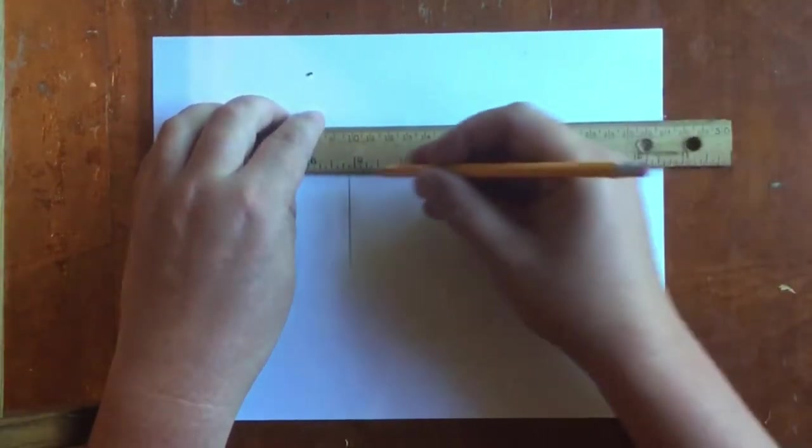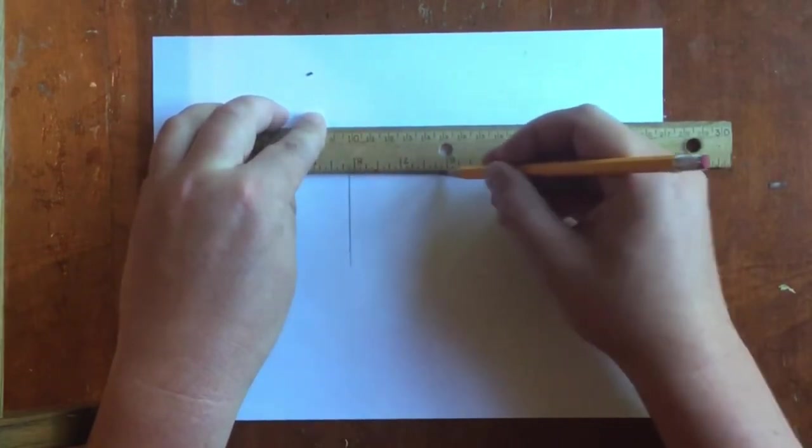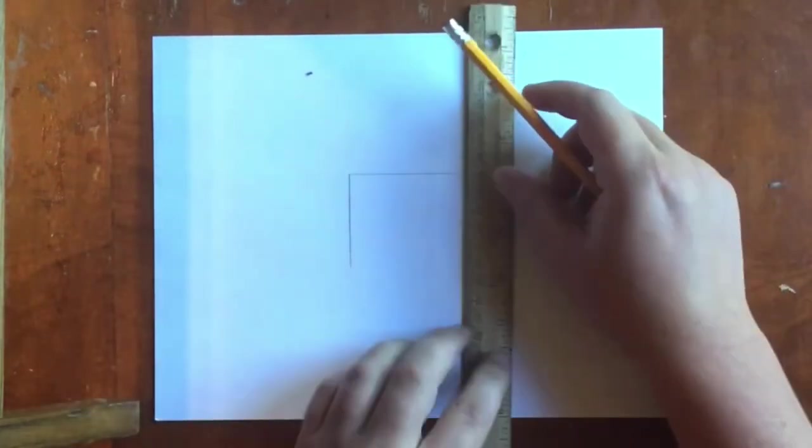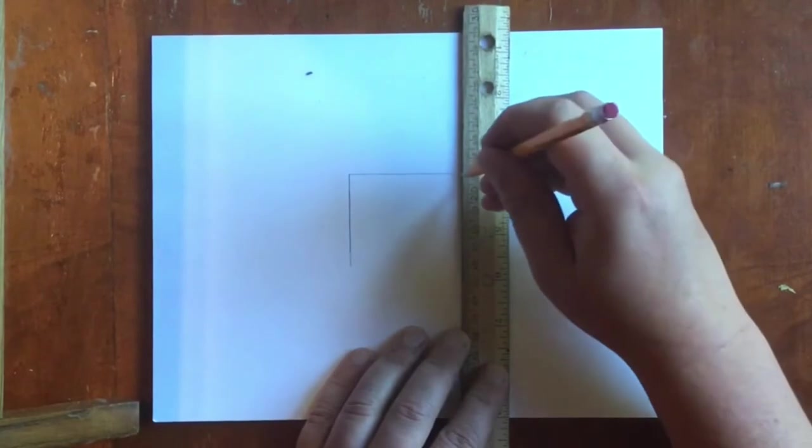We're going to start by making a rectangle in the middle of our paper. Keep it kind of small, use a ruler so the lines are straight. Keep it neat.